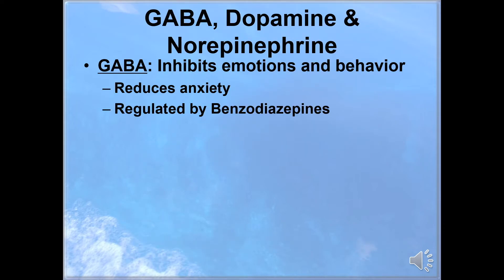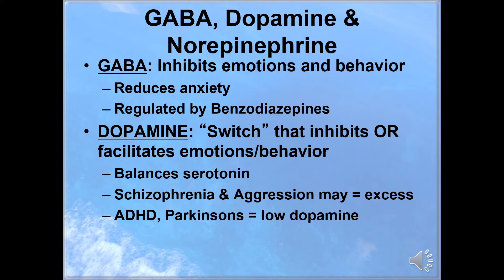Our second neurotransmitter is GABA. GABA inhibits emotions and behavior and reduces anxiety. It does this because the GABA receptors decrease action potentials generated by neurons in the amygdala. As a result, the activity of the amygdala as a whole is decreased, and fewer neurons are sending signals from the amygdala to other parts of the brain, which in turn leads to a reduction in the physiological and psychological markers of stress and anxiety. Benzodiazepines regulate the GABA system, and that's why they're often used to treat anxiety.